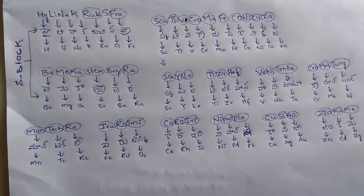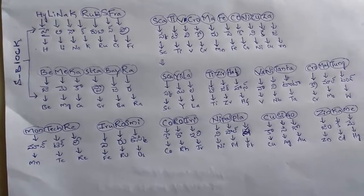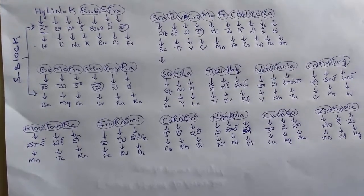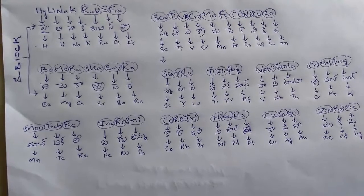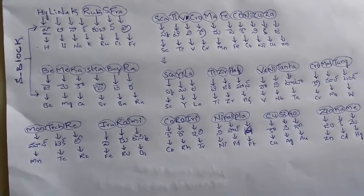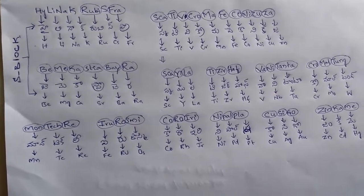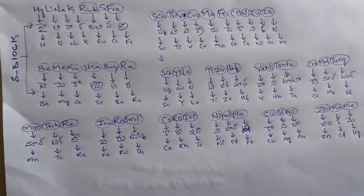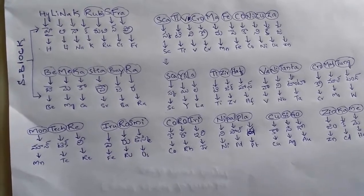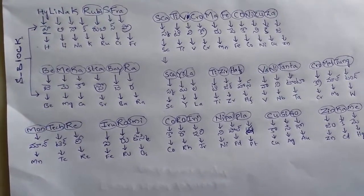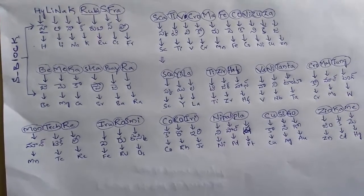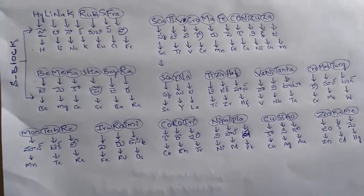Next, second group of s-block elements. How to pronounce it? They make a strawberry. Once again, they make a strawberry. Be means beryllium, Mg means magnesium, Ca means calcium, Str means strontium, Ba means barium, Ra means radium.